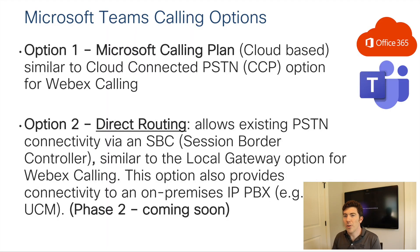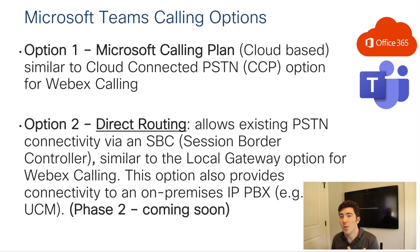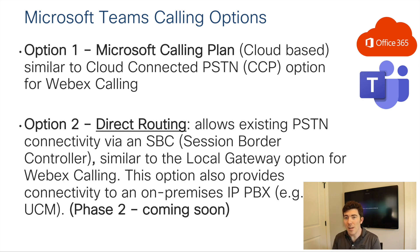So first things first, there are a couple key differences between direct routing and just using Microsoft-based calling. Microsoft calling plans let you get your PSTN access directly from Microsoft, though I hear it's a little bit pricey, particularly in a larger organization. It might make more sense to do direct routing. Direct routing allows you to bring your own PSTN service — a SIP trunk — into your organization, terminate it on a session border controller, and then have those PSTN calls extended into the Microsoft Teams calling environment.